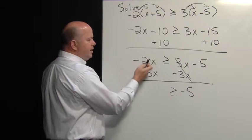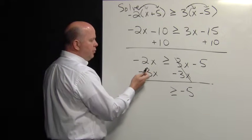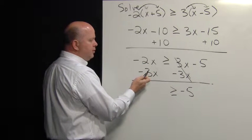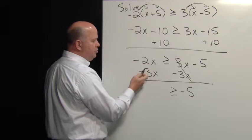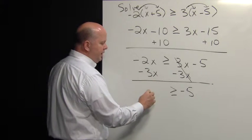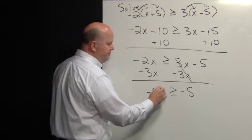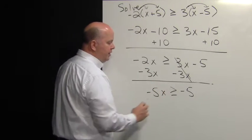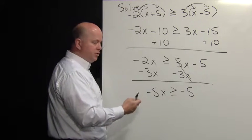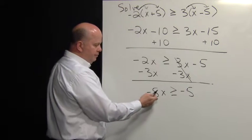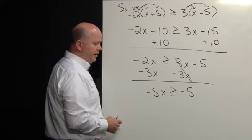We have negative two, and going further to the left on the number line, negative two minus three would be negative five. That is multiplied by X, which is our coefficient of negative five.